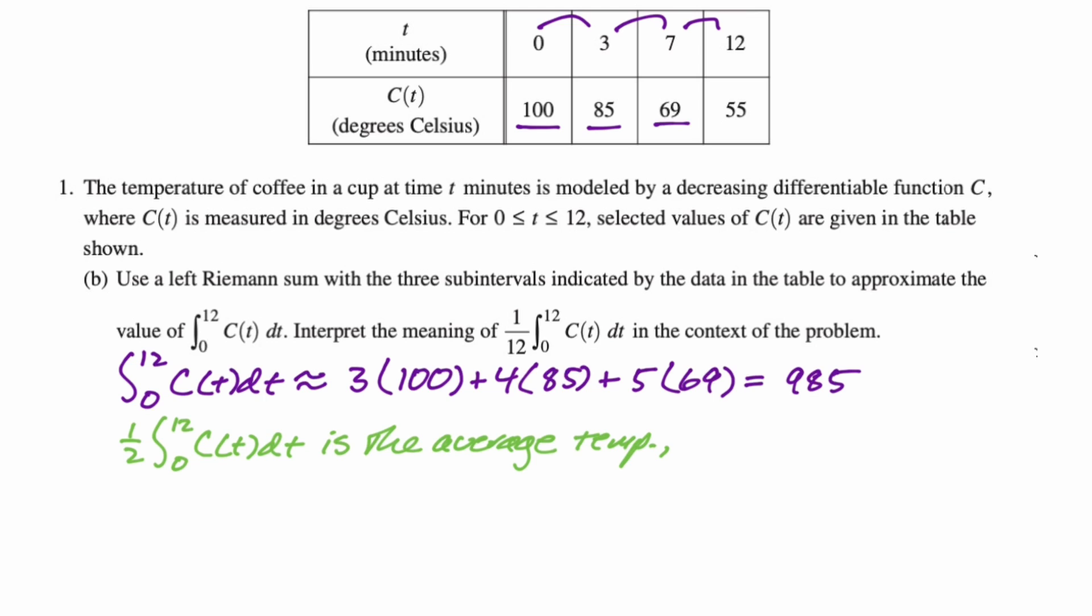Now, what are the units of the average temperature? They're just the units of C(t). So in degrees Celsius of the coffee in the cup, and so we'll just say that, on the time interval from t equals 0 to t equals 12, and then we want to say minutes.